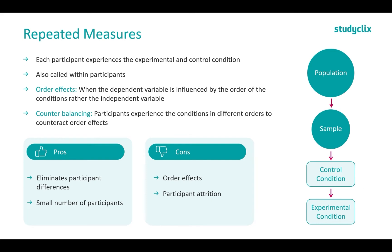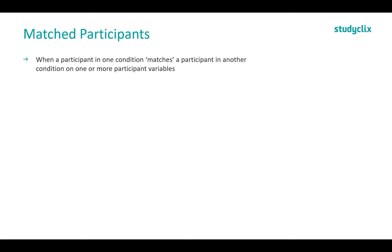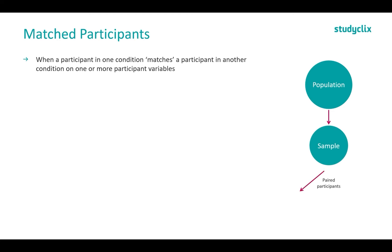The final experimental design we're going to look at is matched participants. This is when a participant in one condition is matched to a participant in another condition on one or more participant variables. We start off with our population, take a sample, and then pair up participants and put one in the experimental group and one in the control group.